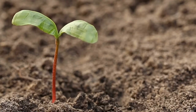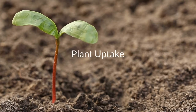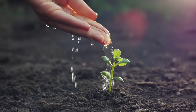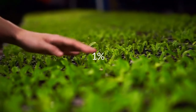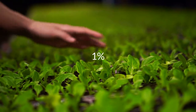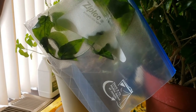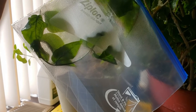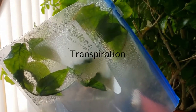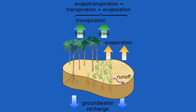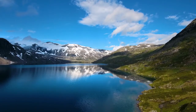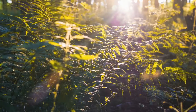The water a plant takes from the soil is from plant uptake — water taken from the groundwater flow and soil moisture. Only about one percent of this water is actually used by the plant, and the rest is passed back into the atmosphere in the form of water vapor through a process called transpiration. The terms transpiration and evapotranspiration are often used together, but evapotranspiration is a more inclusive term, as it includes evaporation of lakes, streams, oceans, and plants.